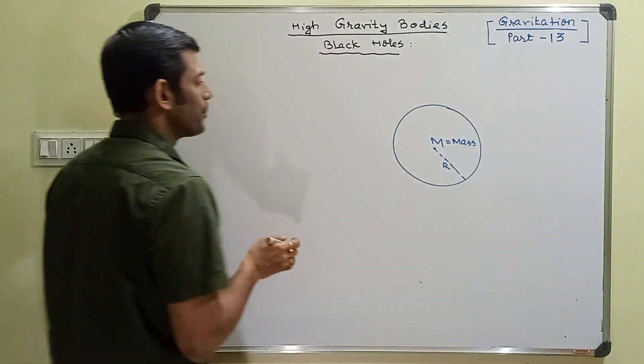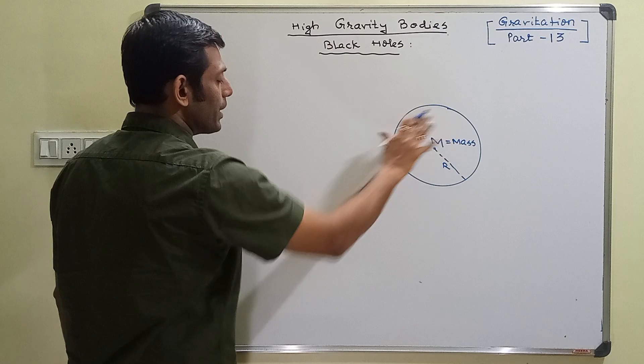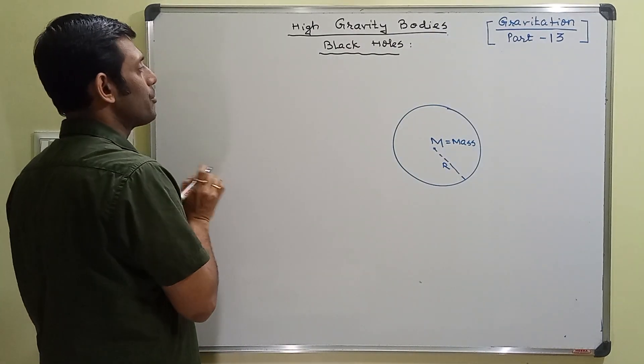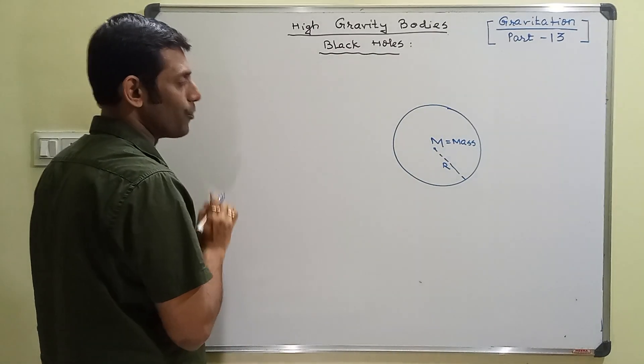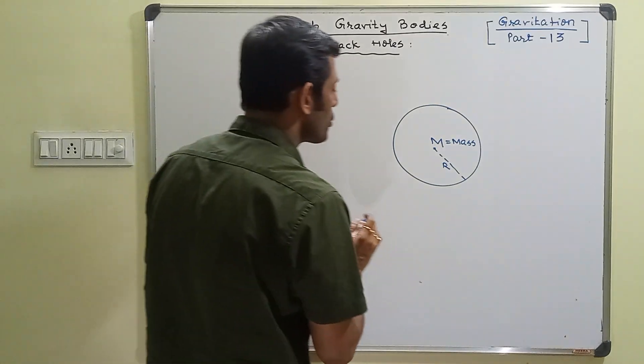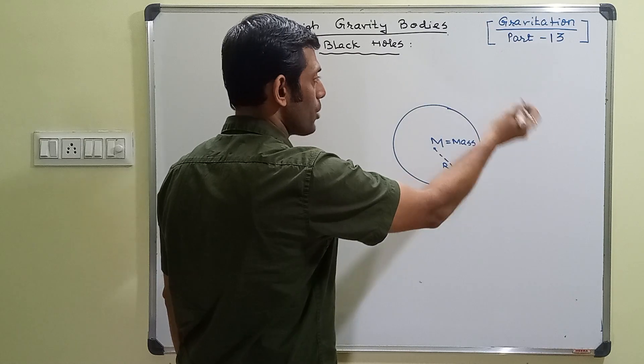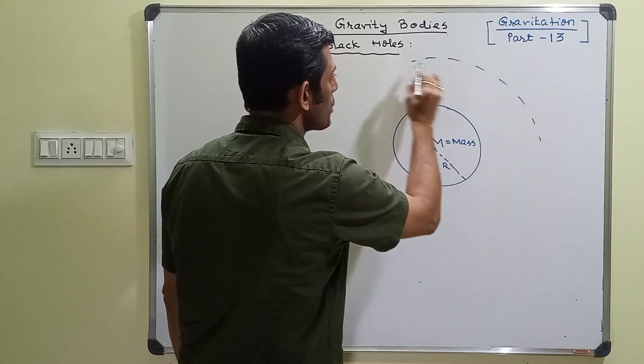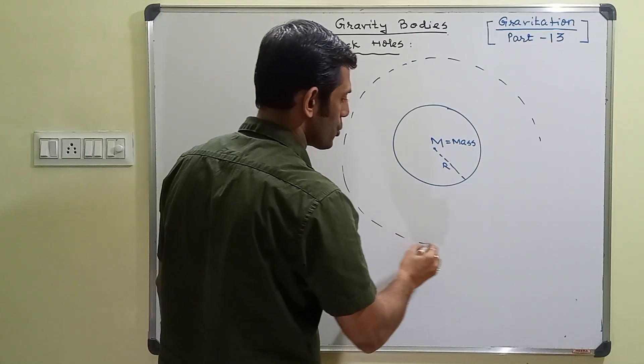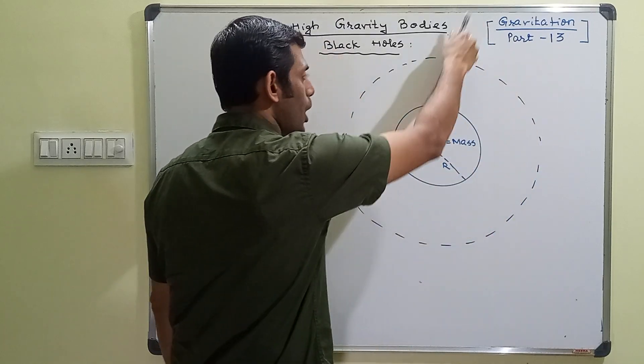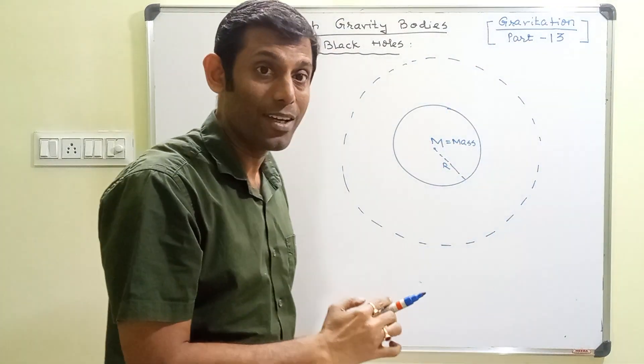Its density is very high, meaning mass per unit volume is very high. Suppose its gravitational influence is very strong, so strong that within this gravitational influence if anything comes it can hardly go back.